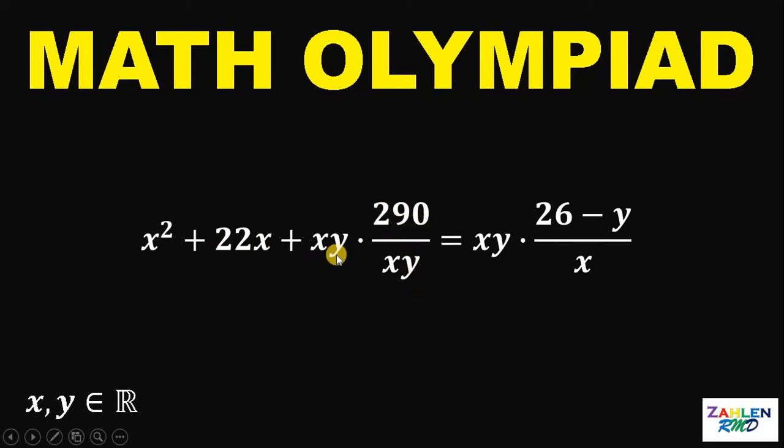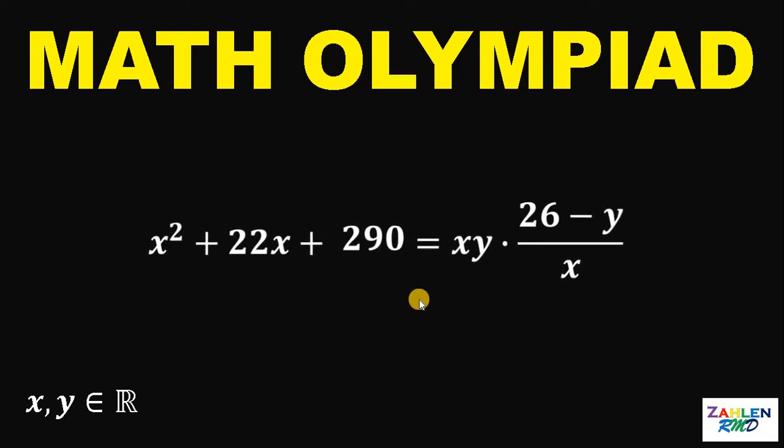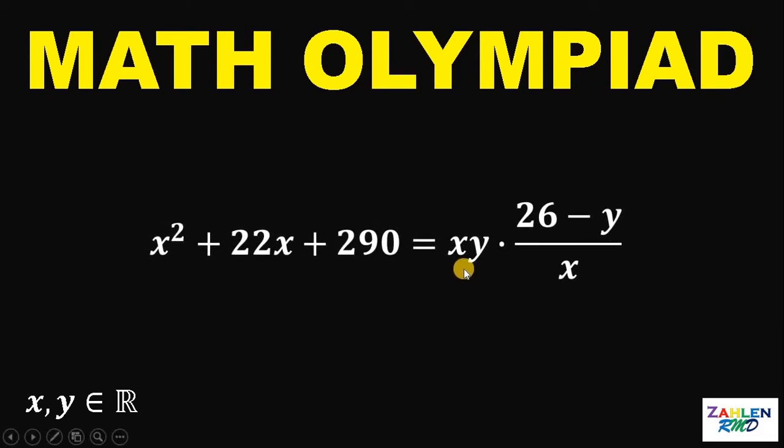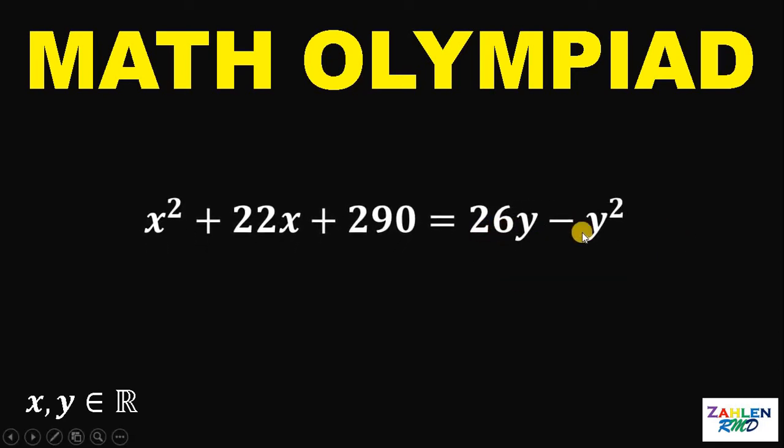Now, xy times 290 over xy, xy cancel out, so this is just 290. On the right-hand side, xy times 26 minus y over x, this will give us 26y minus y squared.